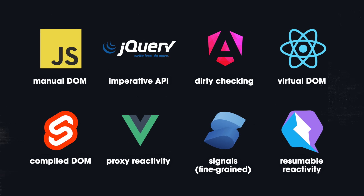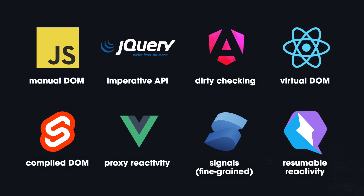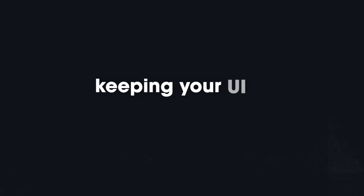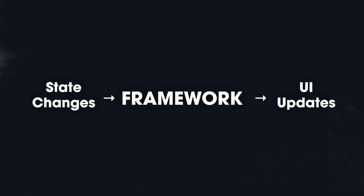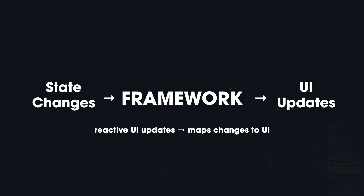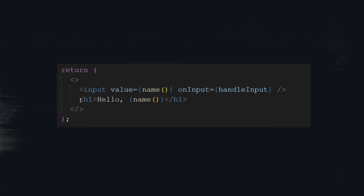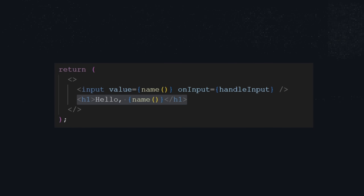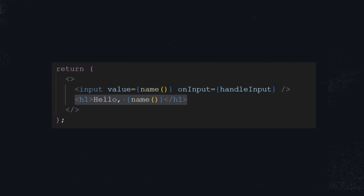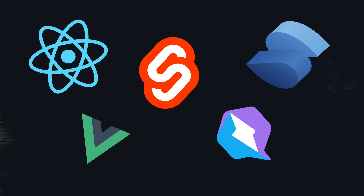So with all of this being said, why reactive UI updates? Because all of these frameworks, no matter how different their approach, are trying to solve the same problem: keeping your UI in sync with your state — and doing all of that efficiently, reliably, and declaratively. Reactive UI updates are the foundation that makes that possible. It removes manual DOM sync, lets you focus on what the UI should look like instead of doing every single thing manually, and it scales from counters to full-blown applications. They all have different philosophies and trade-offs, and some are faster than others, but every modern JavaScript framework is reactive — because doing it manually sucked, and we are never going back.